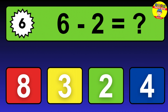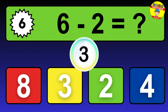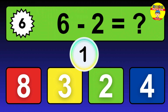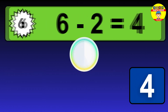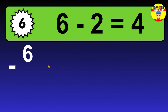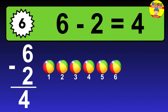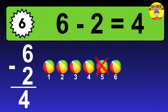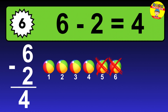Question 6. 6 minus 2 equals what? The answer is 6 minus 2 is 4. Let's count it: 1, 2, 3, 4.